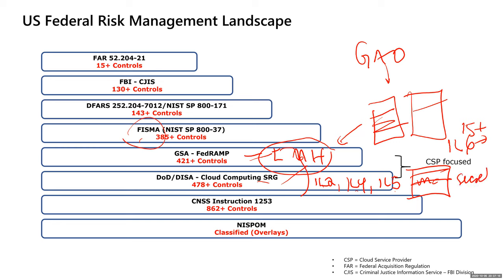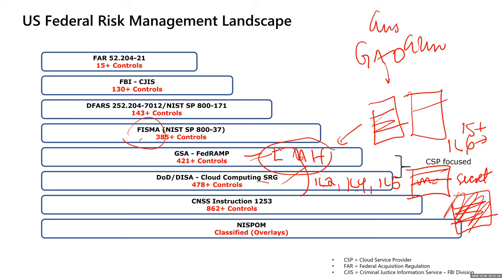Anything that gets into IL6 — or IL5-plus overlays — starts getting into the sensitive part, because IL6 can take up to secret data. It requires its own dedicated data center, and one of the requirements is that the identity of the data center must be completely isolated. We know there's AWS GovCloud and Azure Government, and you might know they're in Manassas or Ashburn — but you won't know where the IL6 or IL5-plus data centers are, because they carry heavy sensitive information.